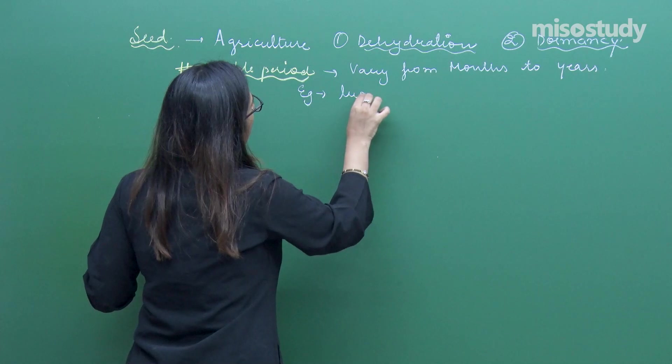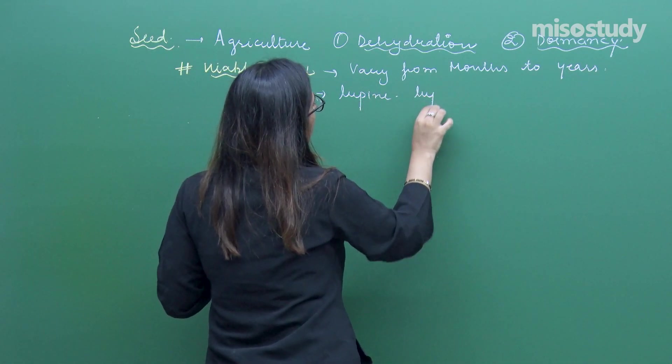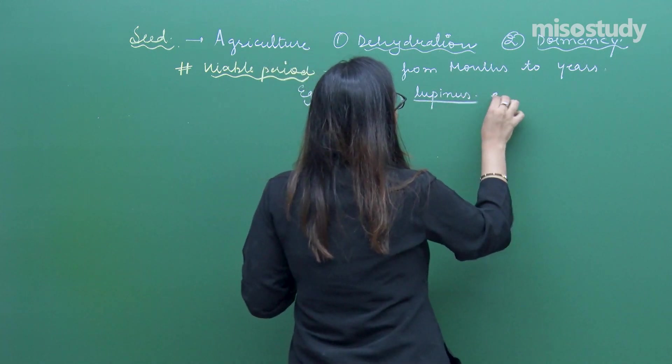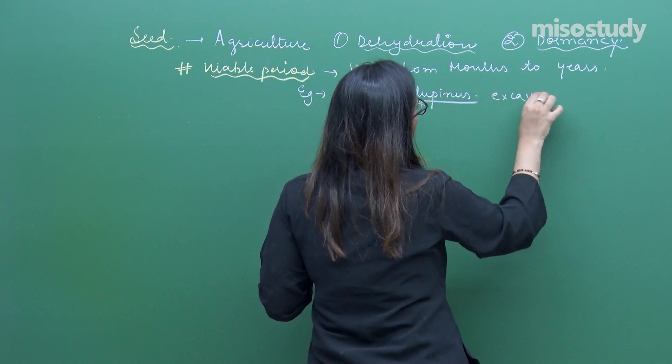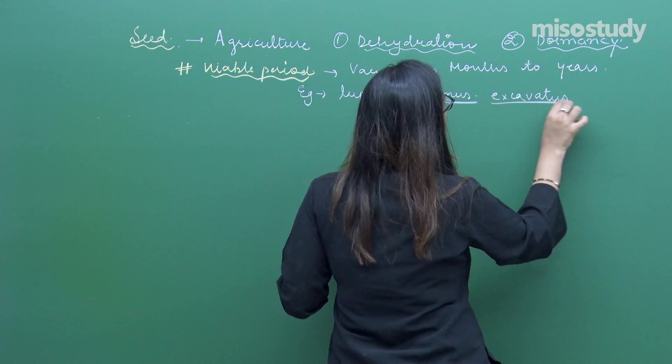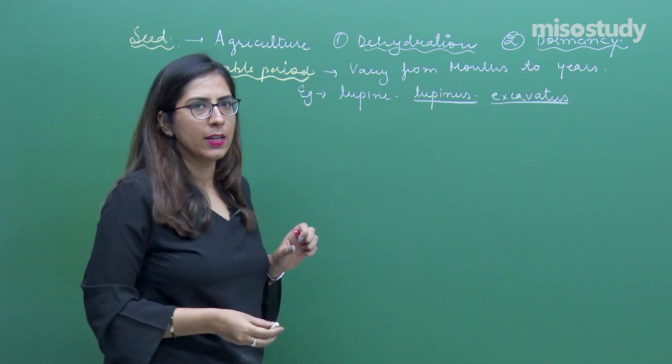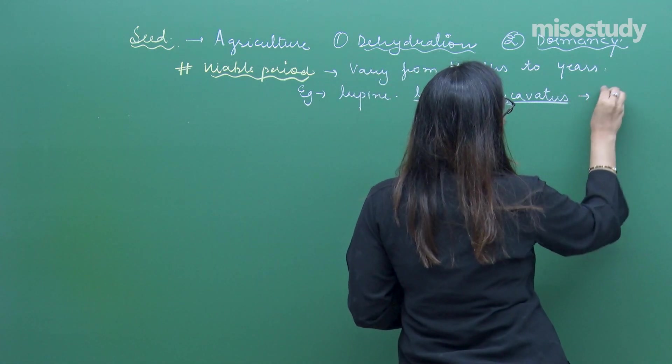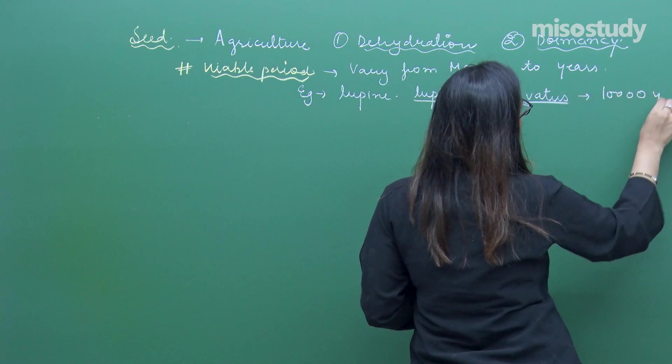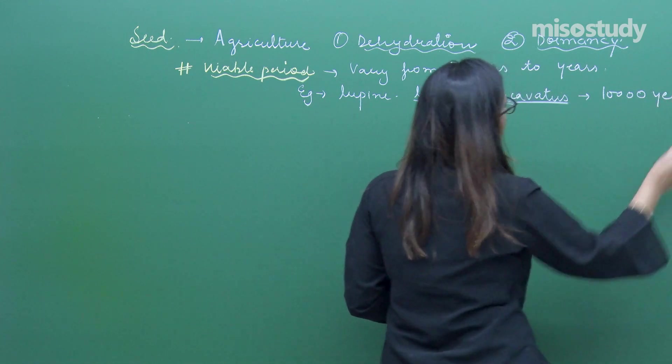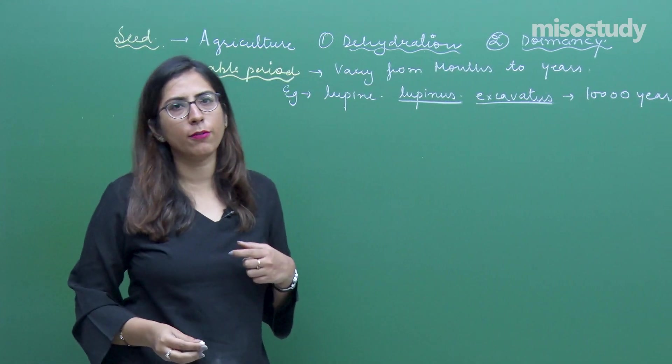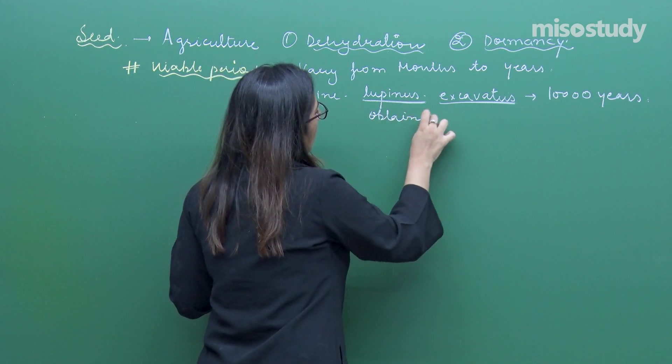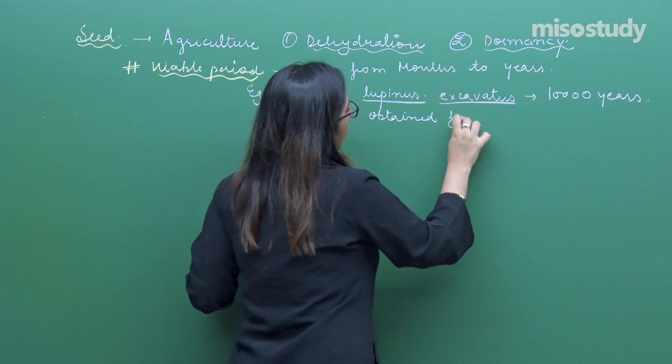In this case we have a very good example, that is lupinus excavitus. Lupinus excavitus is a seed which is extracted by the excavation activity and it has a viable period of around 10,000 years. This is obtained from arctic tundra.